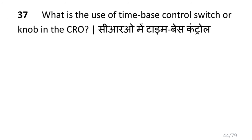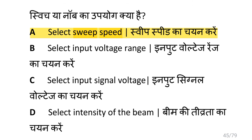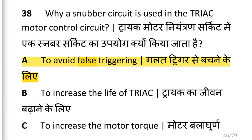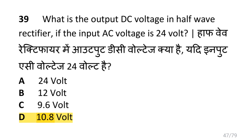What is the use of the time-base control switch or knob in the CRO? i.e. to select sweep speed. Why is a snubber circuit used in a triac motor control circuit? i.e. to avoid false triggering. What is the output DC voltage in a half-wave rectifier if the input AC voltage is 24V? i.e. 10.8 volts.